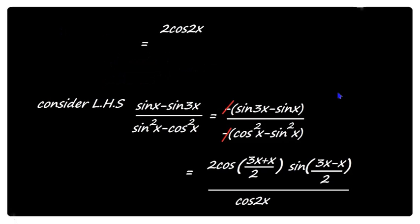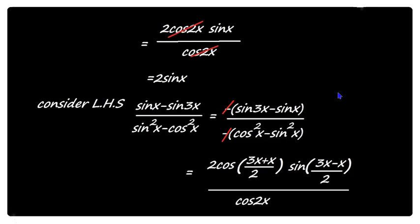Simplifying the numerator: (3x+x)/2 = 2x giving cos 2x, and (3x-x)/2 = x giving sin x, so numerator is 2 cos 2x into sin x. Dividing by cos 2x: cos 2x gets cancelled, and what remains is 2 sin x, which equals the right hand side.